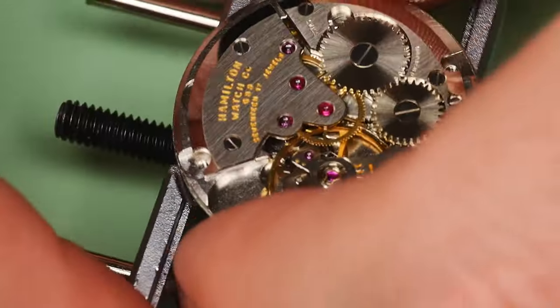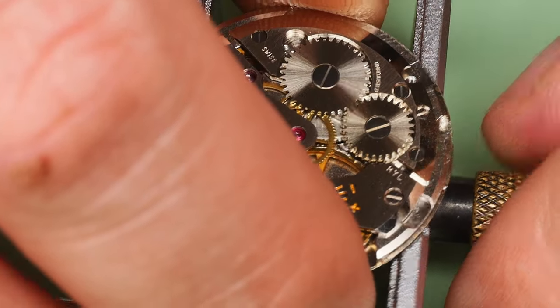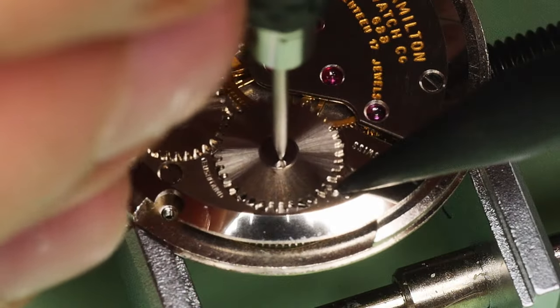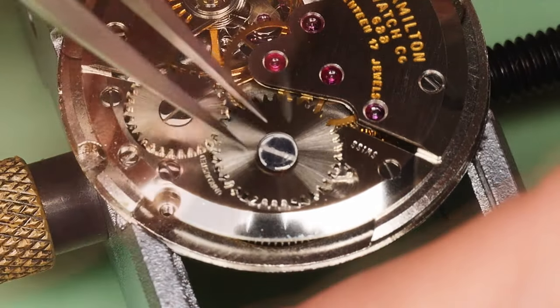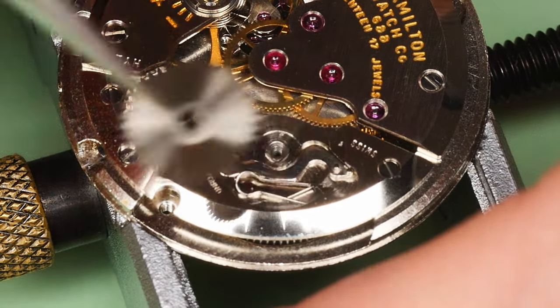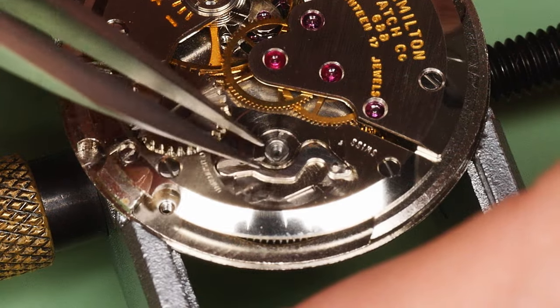Okie doke, time to flip the movement over and get busy on the watchmaker side. Before I do anything, I'll let any remaining power out of the mainspring by moving the click out of the way and letting the screwdriver slip through my fingers. Then I can remove the ratchet wheel and the click and click spring underneath it.